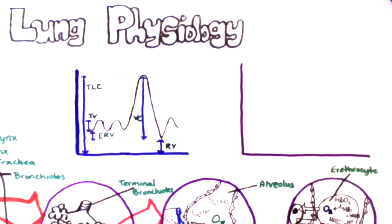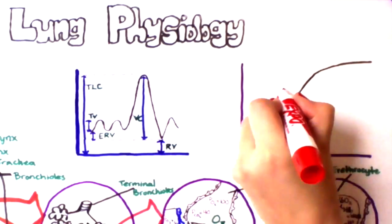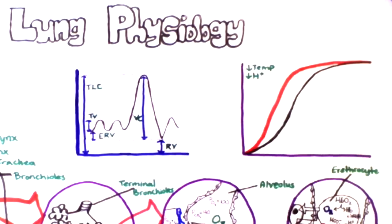Looking at the hemoglobin dissociation curve, we see that the oxygen affinity of hemoglobin is affected by many factors.